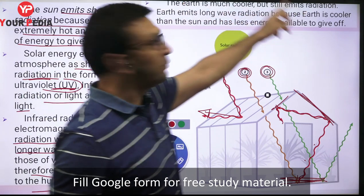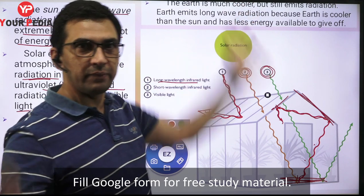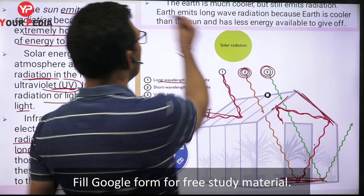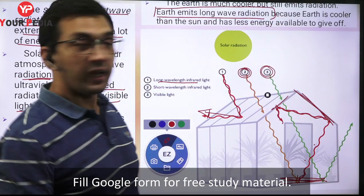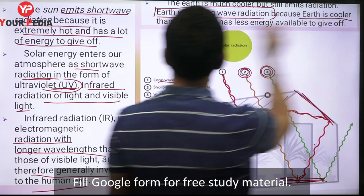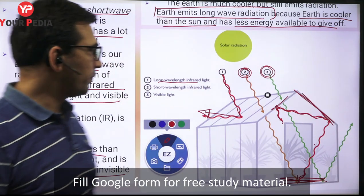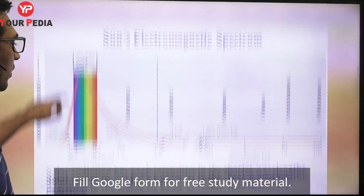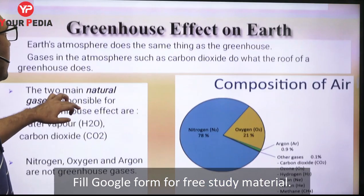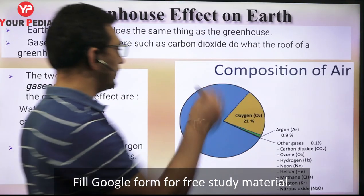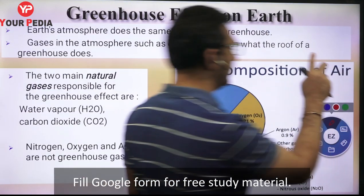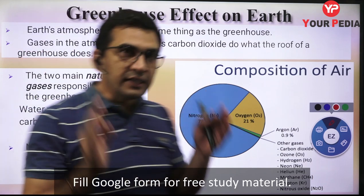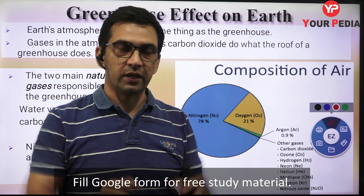The earth is much cooler but still emits radiations - any body above zero Kelvin does. The earth emits long wave radiations, mostly infrared, because it is cooler than the sun and has less energy to give off. This is the complete process behind the greenhouse effect. We studied how temperature inside a greenhouse increased - now we call this the greenhouse effect.